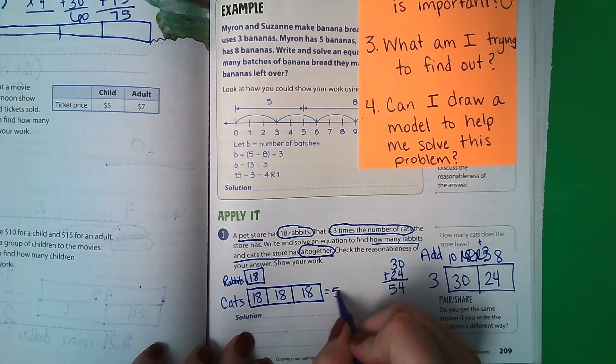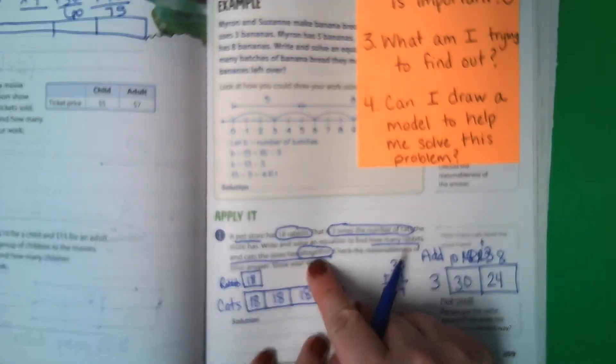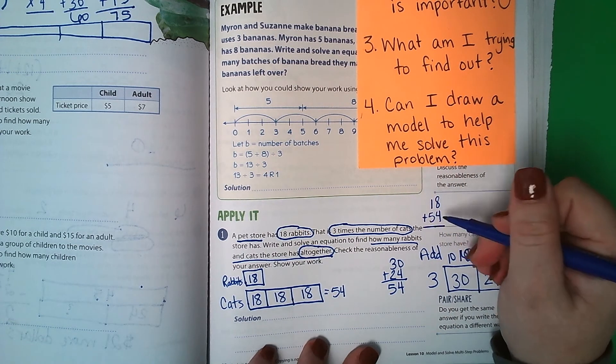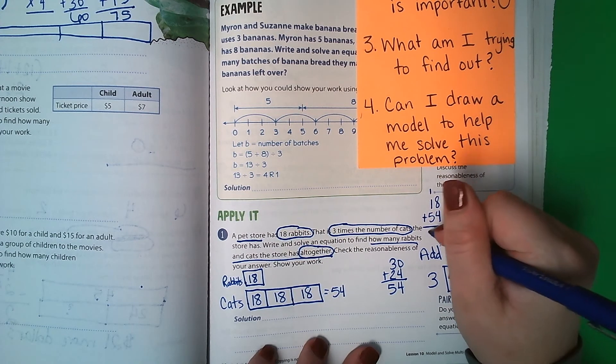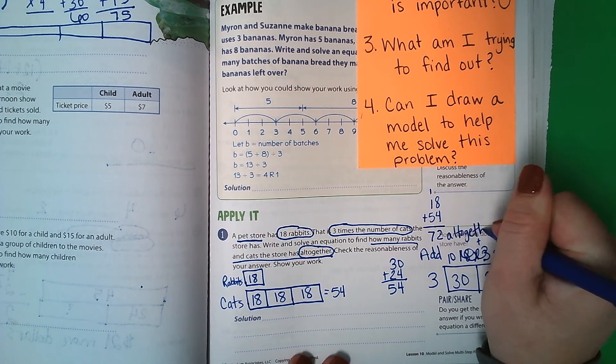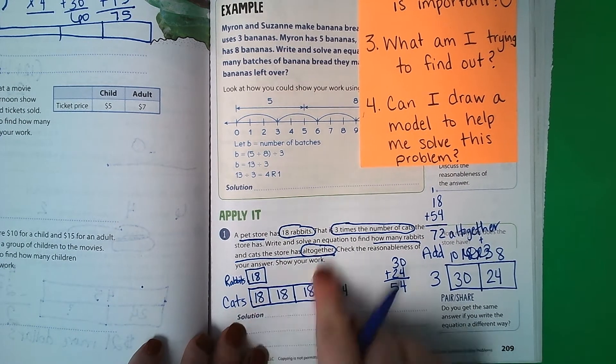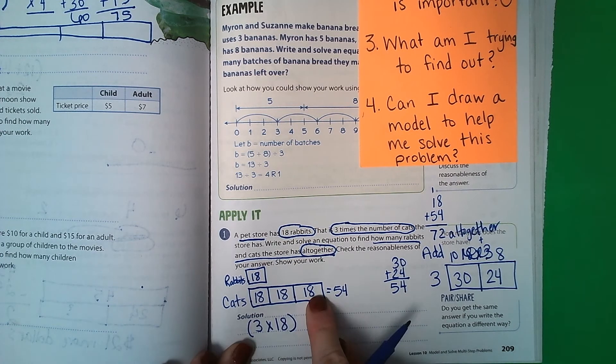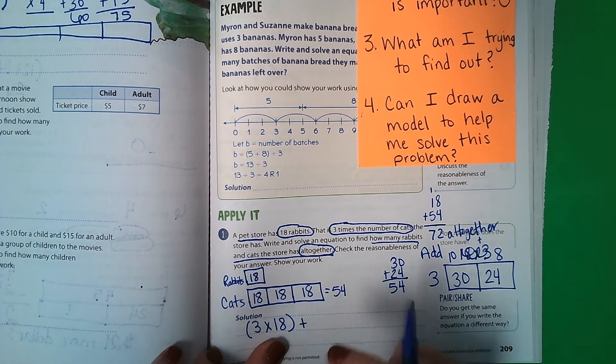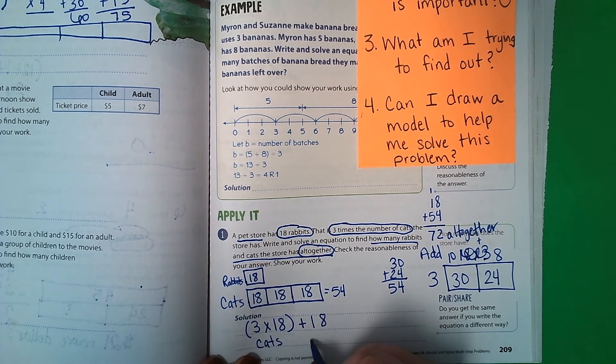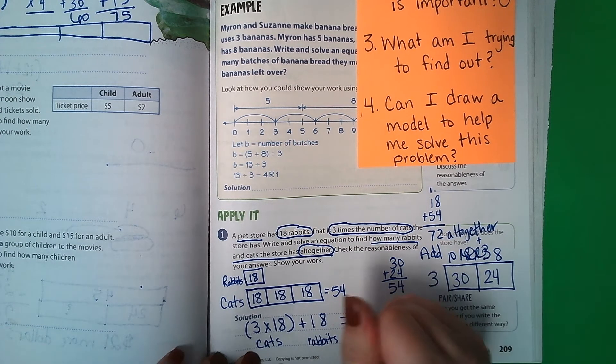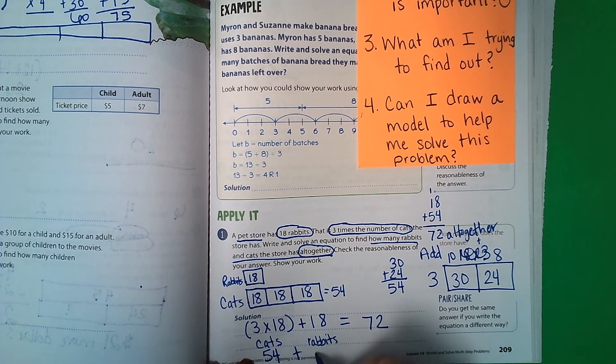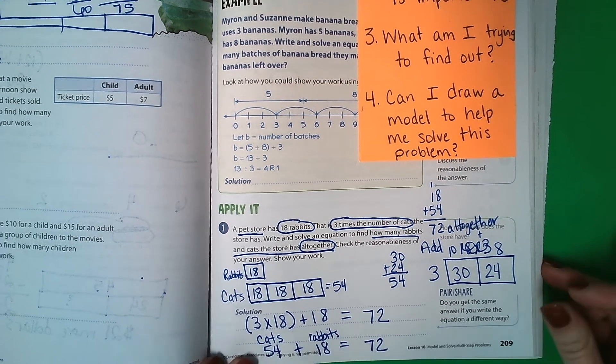So there's 54 cats and 18 rabbits, and they want to know how many are altogether. So 18 plus 54, 8, 9, 10, 11, 12, 5, 6, 72 altogether. But they want a model. So if we do a model, we can do 3 times 18 because that would give us this answer. But then we add 18 for the rabbits because this is cats, this is rabbits. And we got a total of 72 because 3 times 18 is 54 plus 18, which equals 72. And that is how we solve this problem.